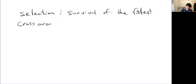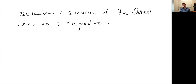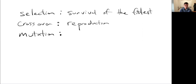Then crossover — the second idea, inspired by the biological process of reproduction so that we'll have a new generation. And then finally mutation, meant to represent sort of natural variation.